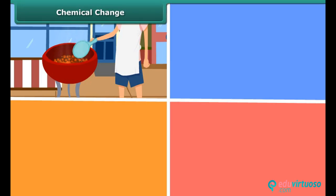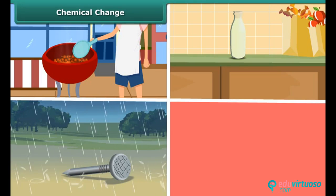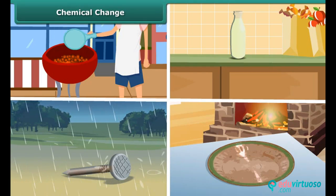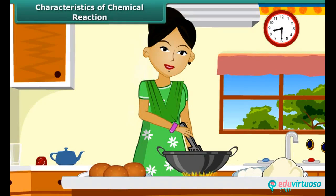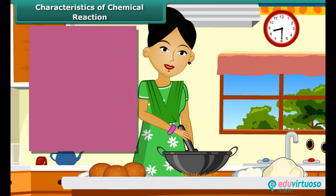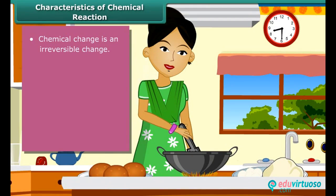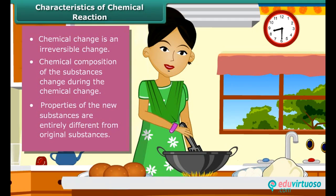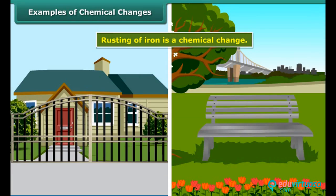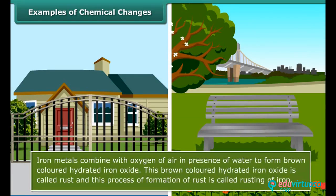Chemical changes include burning of coal, spoilage of milk, rusting of iron, and formation of green film on copper. During a chemical change, a substance undergoes a chemical reaction. You must have seen your mother making puris from the dough of wheat flour. Can you get back the dough from the puri? No — this chemical change cannot be reversed by physical means.